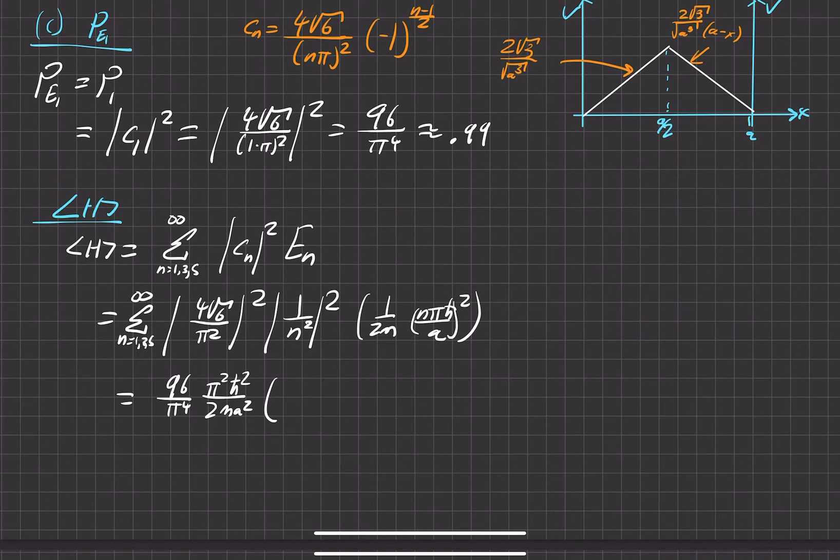Now we'll just go ahead and write out those odd values. So it'll be 1 over 1 squared plus 1 over 3 squared plus 1 over 5 squared. All right, so again, here's a little math secret menu.